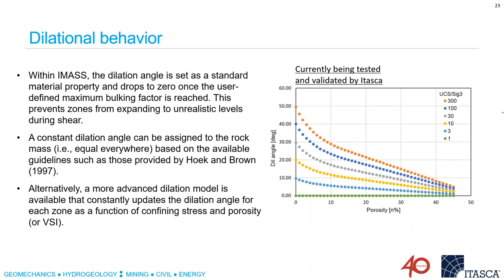Is the tension cut-off for perfectly brittle behavior similar to the old method of just using a fish function to assign zero strength or stiffness to a zone that has failed in tension — i.e., is IMAS just more efficient at doing this? Yes, it's basically the same behavior: as soon as it fails in tension, it goes to zero. But you also have the option of assigning a table that softens the tensile strength as a function of accumulated plastic tensile strain.